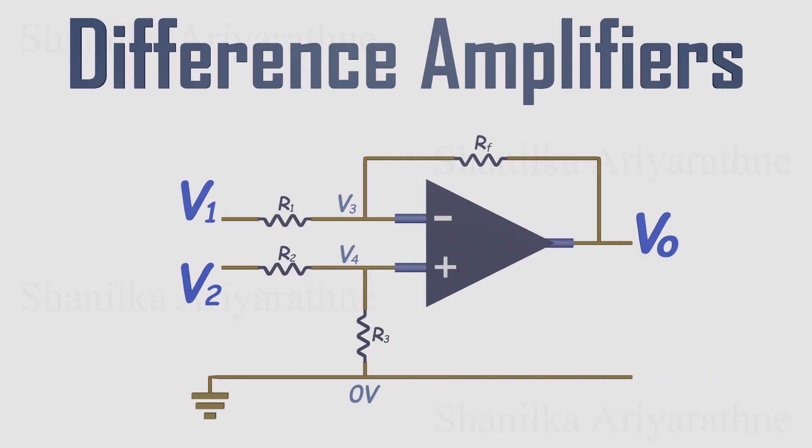Now for the currents. Through the two input resistors, we'll define I1 and I2. The op-amp's input currents are labeled I3 for the inverting input and I4 for the non-inverting input. The feedback resistor carries I5, and the resistor from V4 down to ground carries I6. Great. Everything's labeled. Now we can move into the analysis in a few crisp steps.